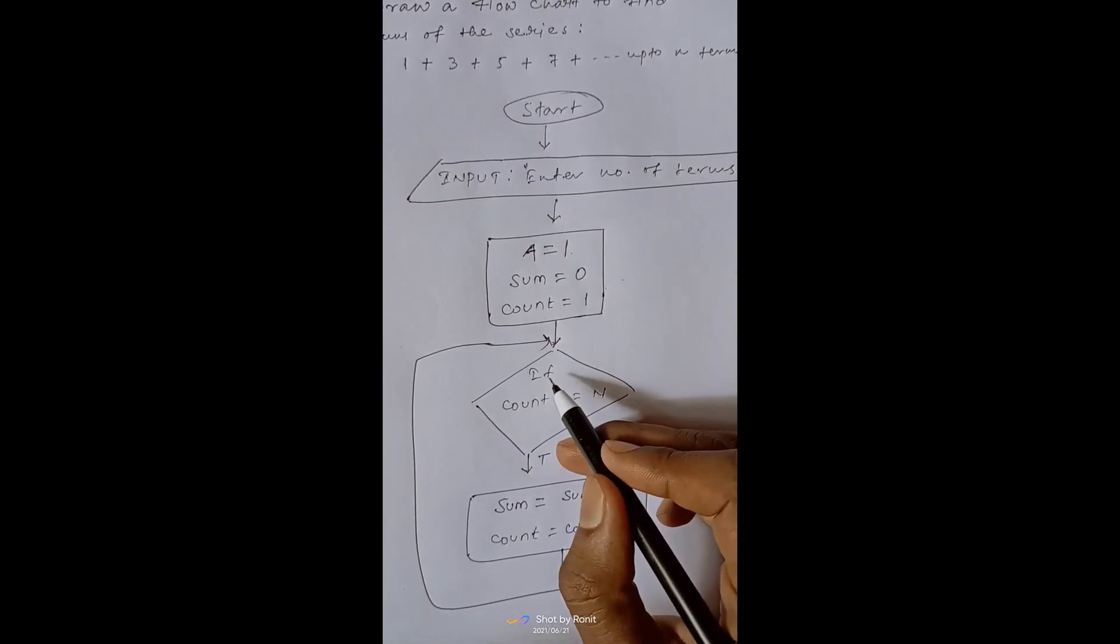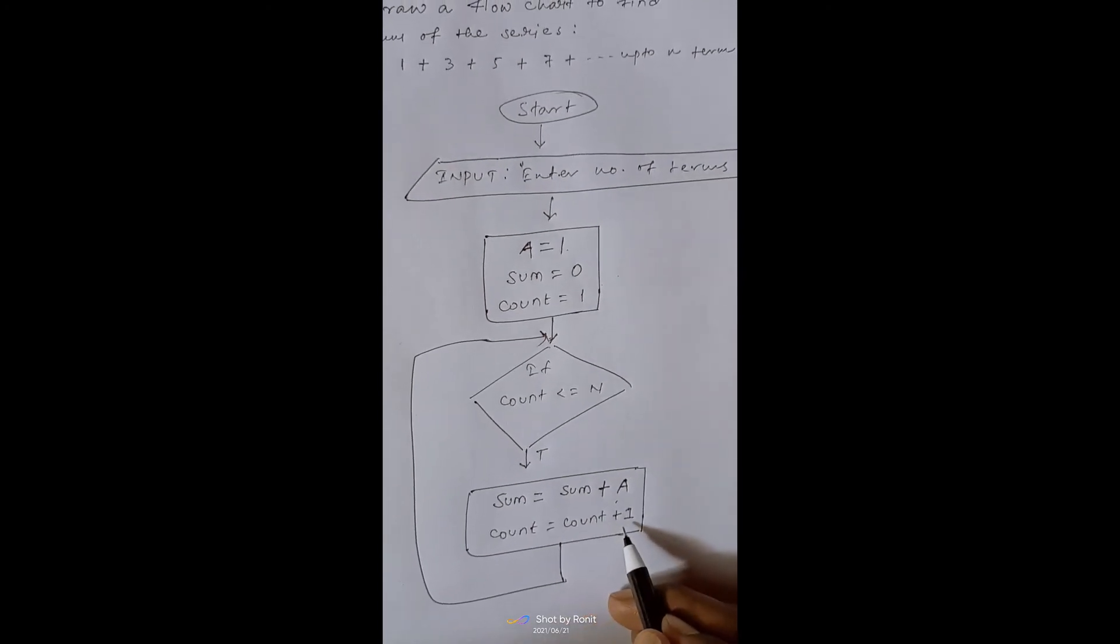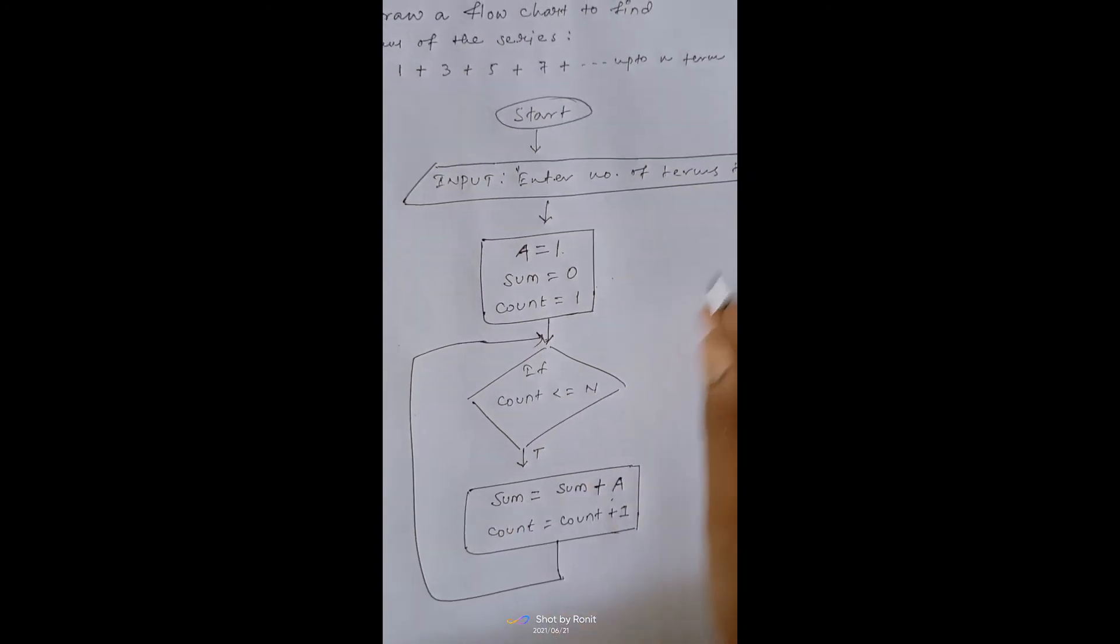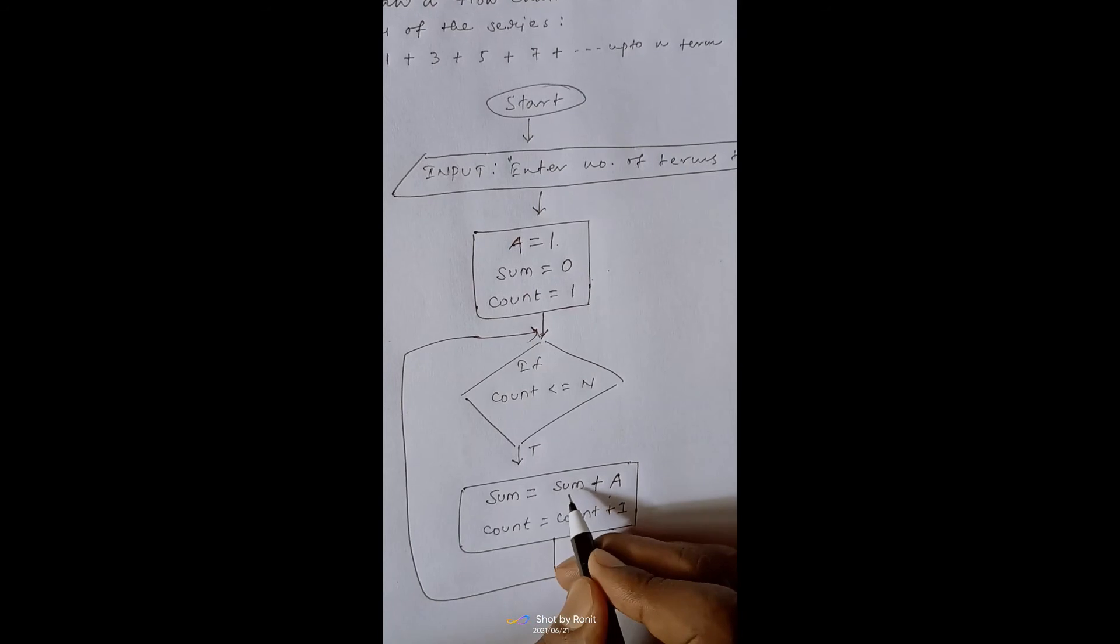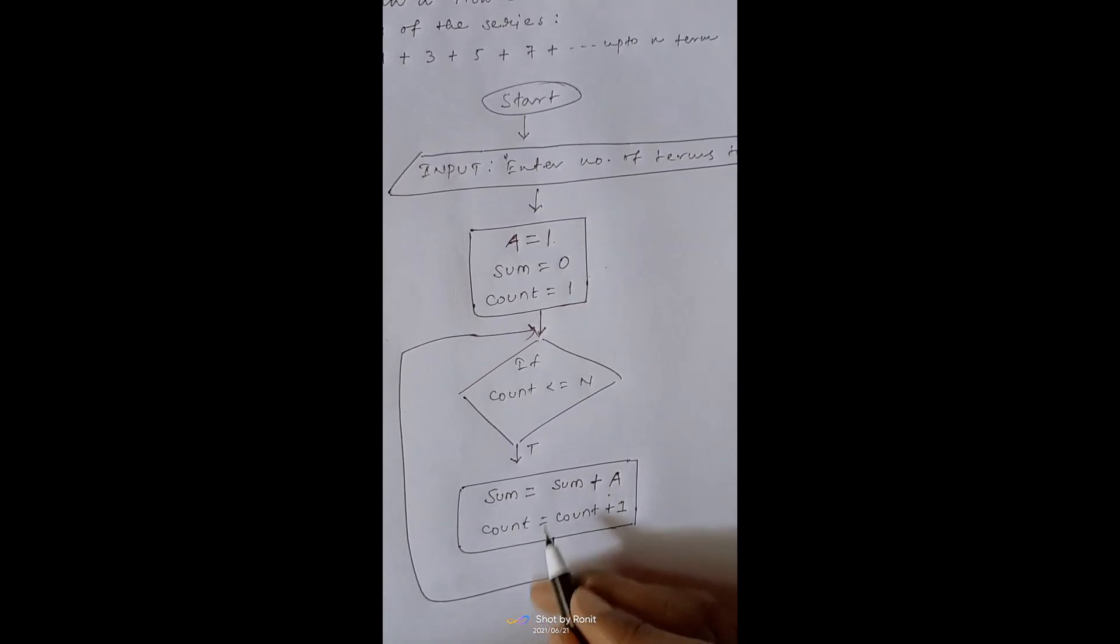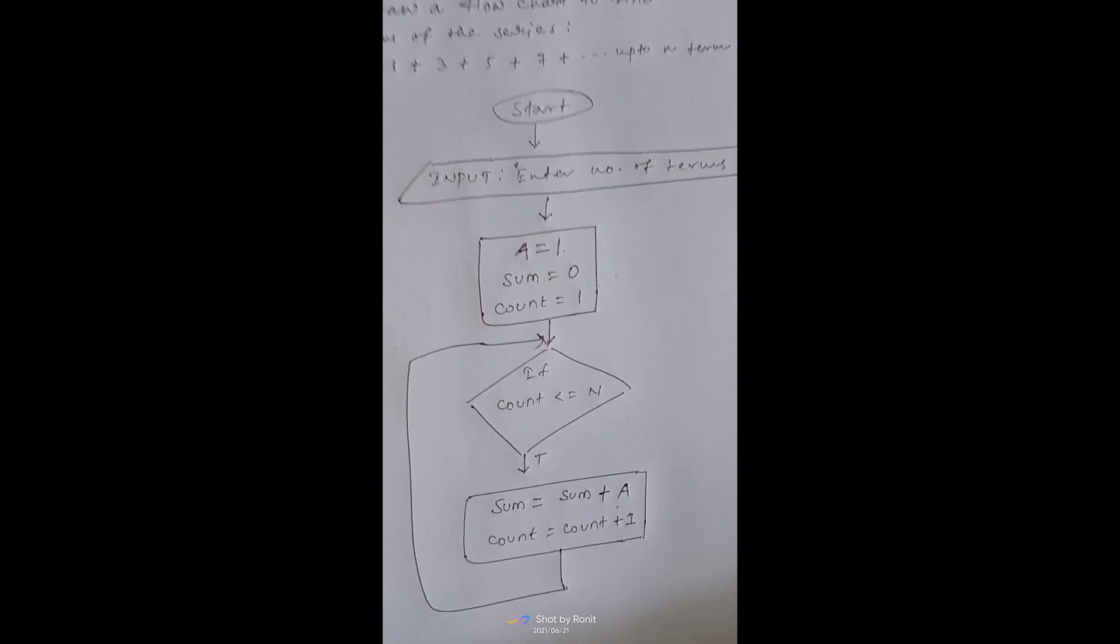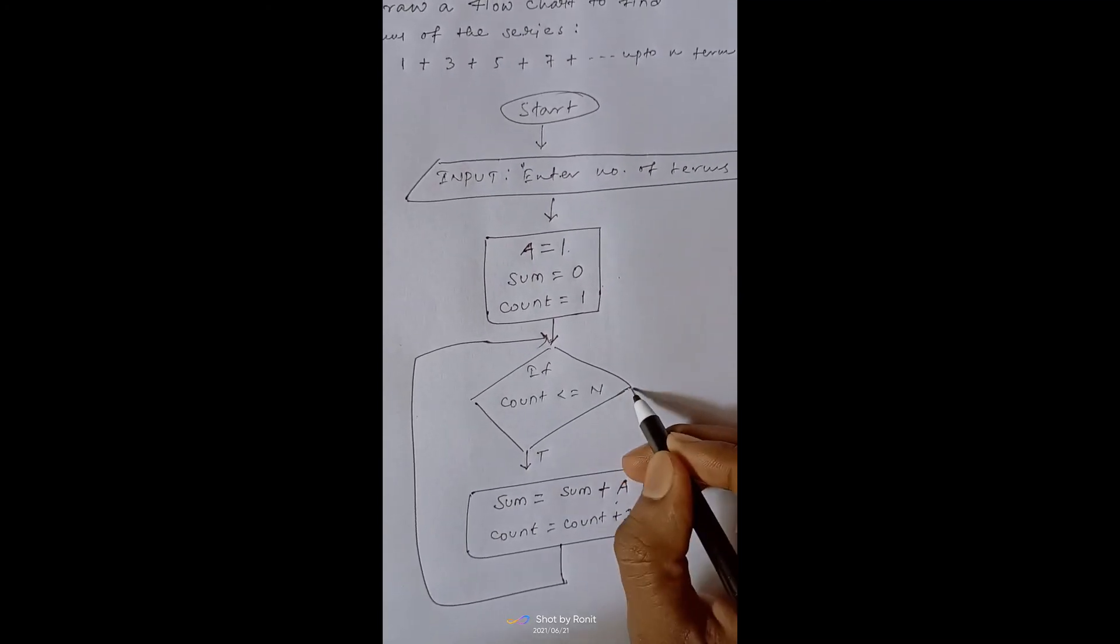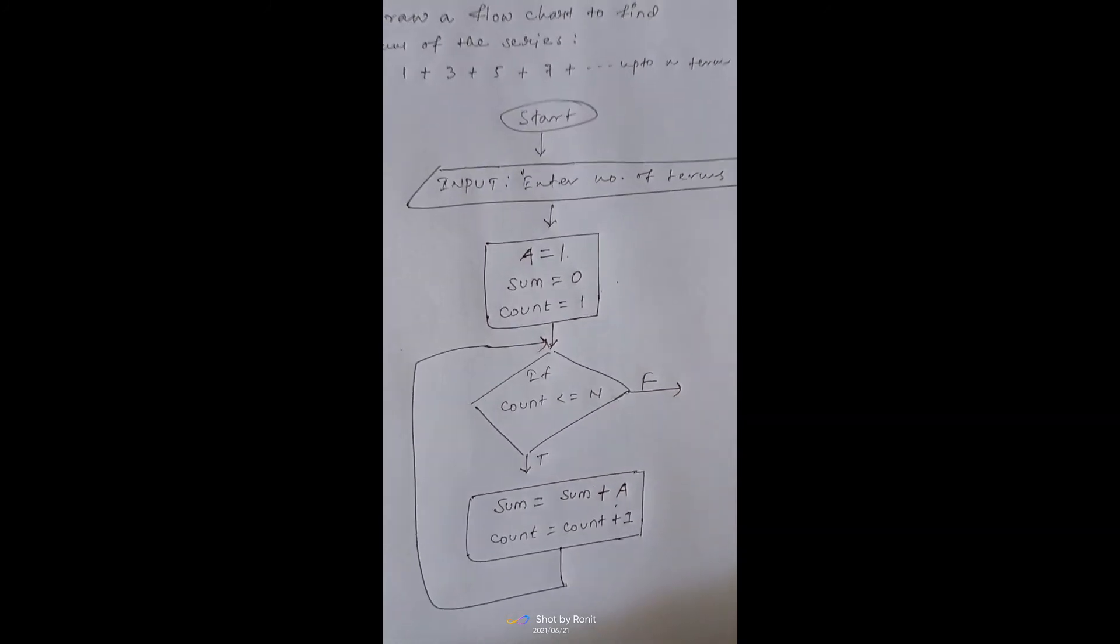Now further this condition will be checked. So at this position count equals 2. If 2 will be less than equals to n, then it will add further and move forward to the next term. One condition will arise when the condition will be false.